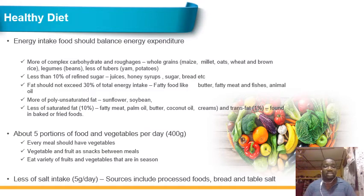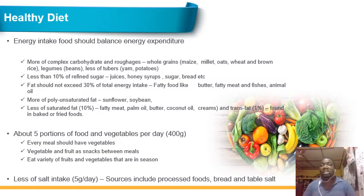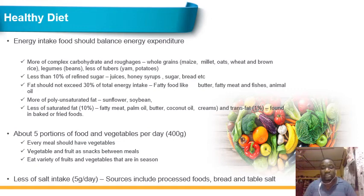Take less trans fats found in baked or fried foods. Per day, you should take at least five portions of fruits and vegetables. What I mean by five portions is that for every meal — breakfast, lunch, and dinner — you should take vegetables. And in between meals as snacks, you should take fruit and vegetables. Eat a variety of fruits and vegetables that are in season. Also, take less salt — less than five grams per day — whether in processed food, bread, or table salt.